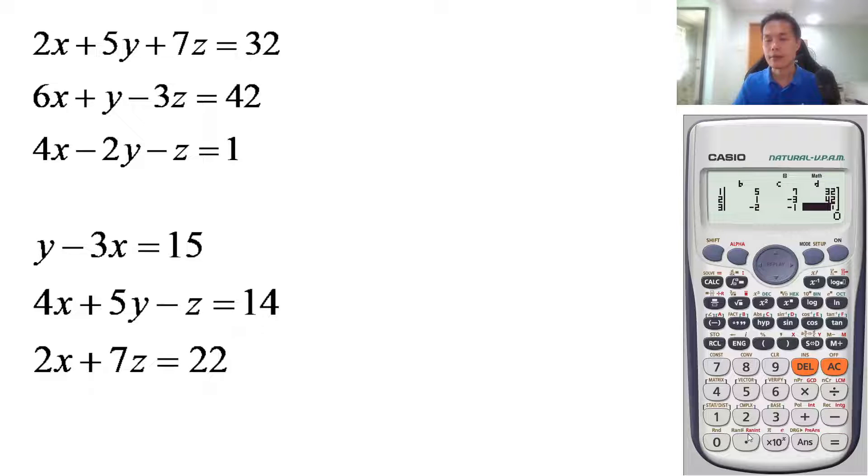Okay, so you've got all your abc and d as well. So you just press equal sign one more time, they'll show you the first answer x is four. Press equals one more time, second answer y is nine. Press the third time, you'll see z is minus three.